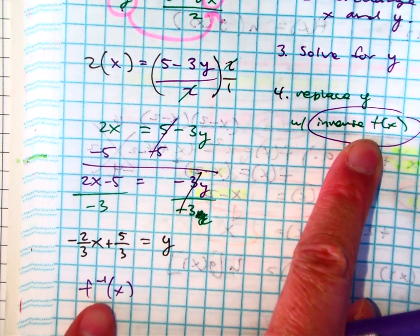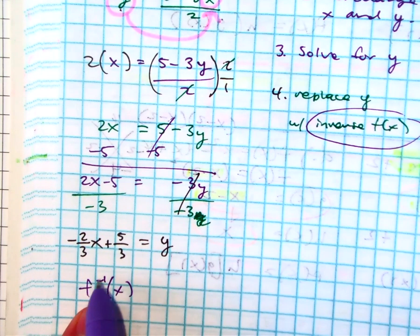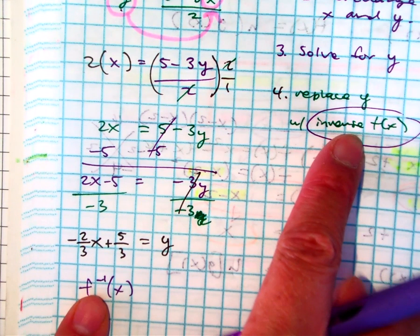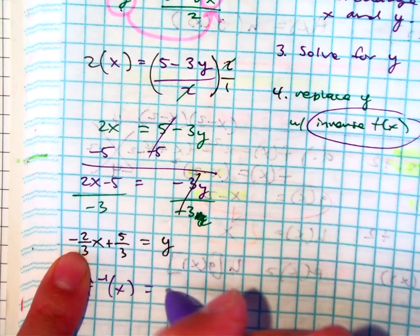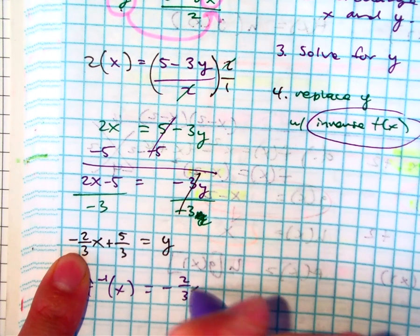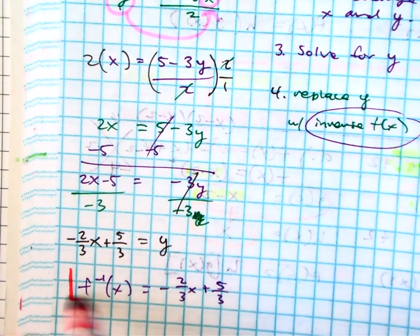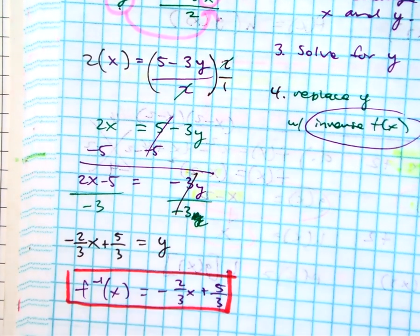Everyone say inverse of x. When you see a negative 1 there, it's not an exponent we've talked about the other day. It just means the inverse. And then I can just write this. And this is our answer.